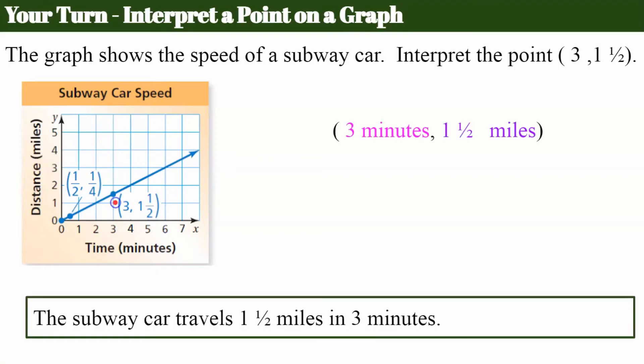Welcome back. So here we go. I hope you have discovered that the 3 was minutes for the x-axis. The 1 1/2 was miles for the y-axis. And here's my sentence. Using the title, the subway car travels 1 1/2 miles in 3 minutes.